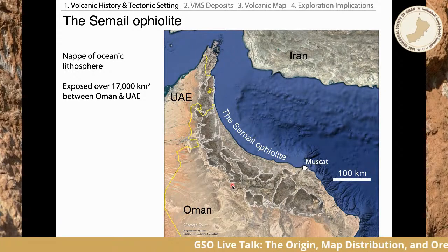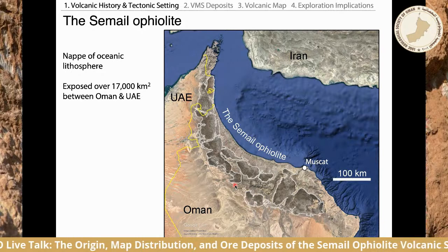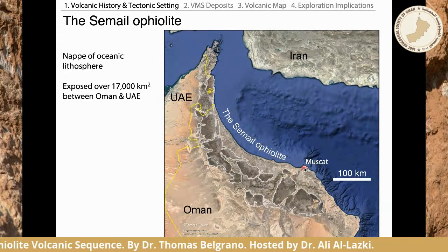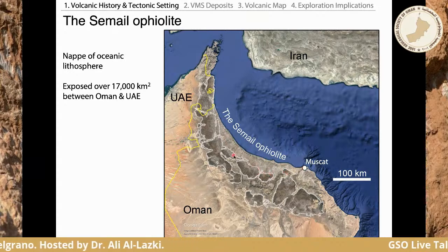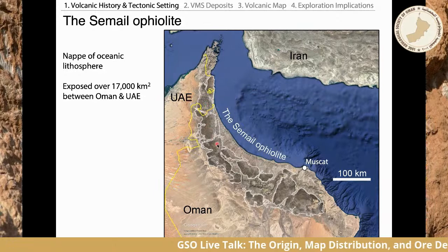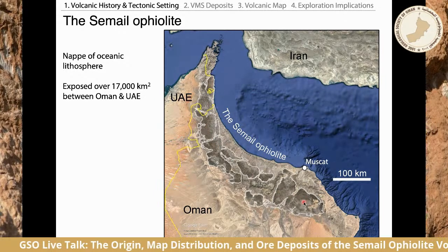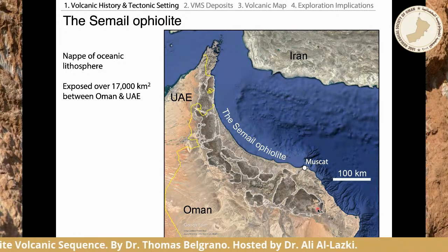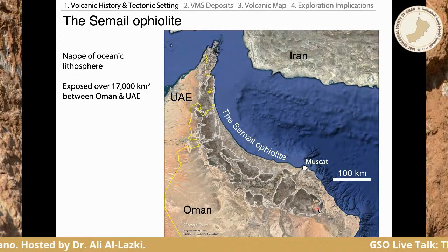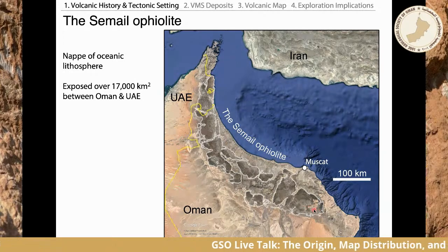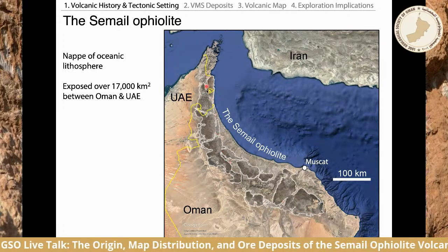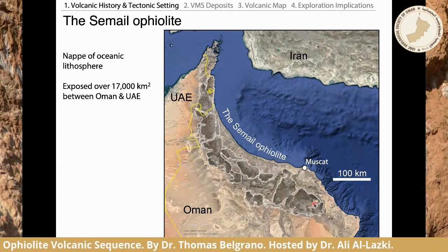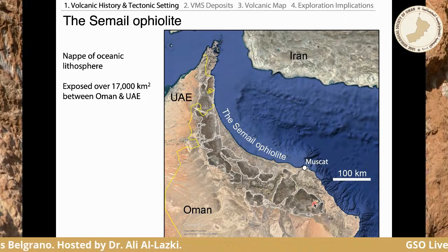Here's a picture of the Samail Ophiolite situated on the north-eastern tip of the Arabian Peninsula — there's Muscat. It sits as a tectonic nappe, like a slice of oceanic lithosphere thrust onto the Arabian margin. It's exposed over some 17,000 square kilometers, which makes it by far the biggest ophiolite obducted on Earth, and it's beautifully exposed rock over its entire length — also the best exposed ophiolite on Earth. A real paradise for researchers and even tourists.